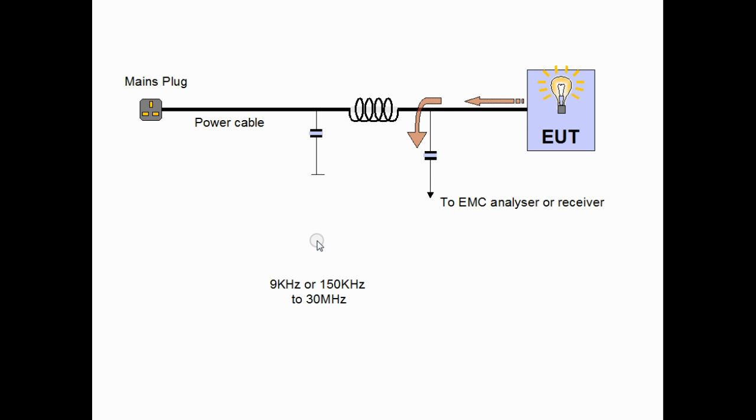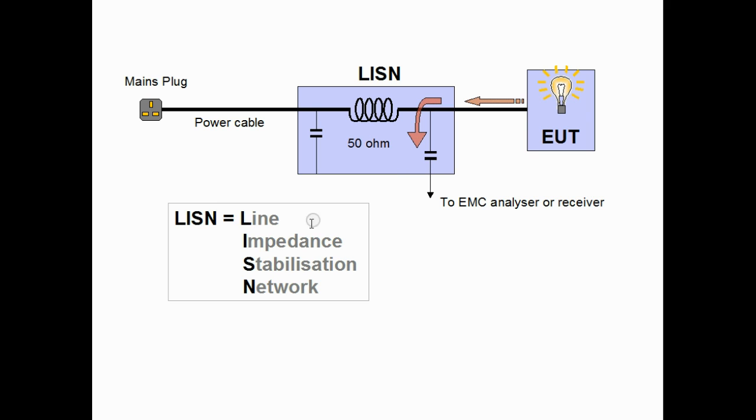What we do is to add in a network which means that the impedance as seen from the EUT is consistently 50 Ohms. So if we all use the same network, we'll all make the same consistent readings. The network is specified by the standards and we should all use these networks. The network is called a line impedance stabilization network because it does stabilize the impedance of the line.